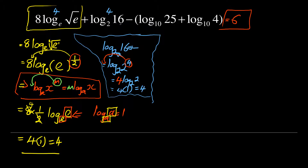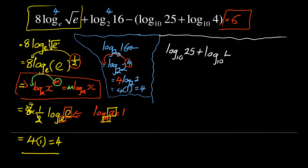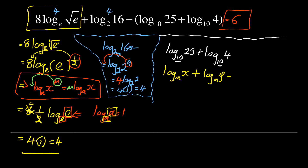Now let us look at the part in brackets. The reason they put it in brackets is that you need to treat it as a single entity. What they have is log base 10 of 25 plus log base 10 of 4. The bases are the same, so I apply the addition law: log base a of x + log base a of y = log base a of (x·y).